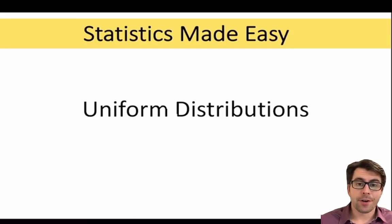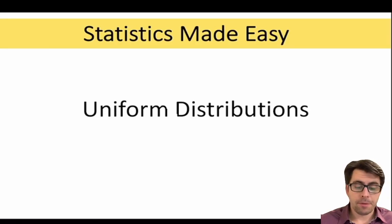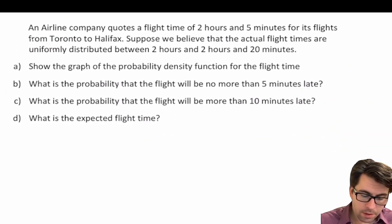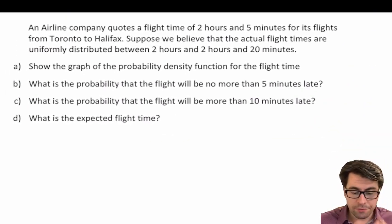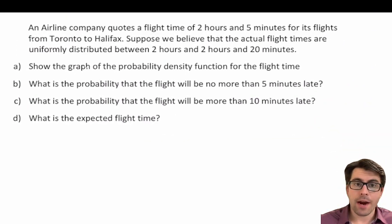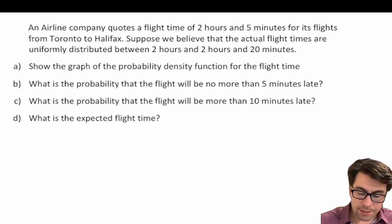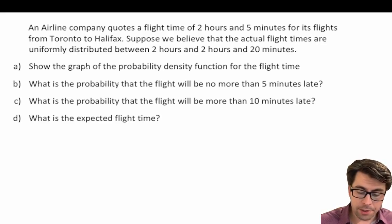In this video, we're going to continue our discussion about uniform probability models. So let's go ahead and dive right in to a few practice problems. An airline company quotes a flight time of two hours and five minutes for its flights from Toronto to Halifax. Suppose we believe the actual flight times are uniformly distributed between two hours and two hours and 20 minutes.